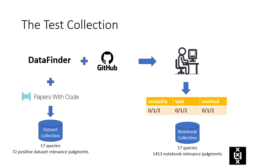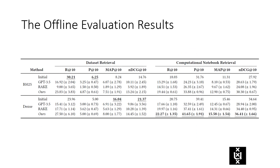We built a test collection to assess the reformulated queries. We chose queries and dataset relevance judgments from the dataset finder, and then further annotated relevance judgments from notebooks. We assess the top five reformulated queries based on the retrieval performance of BM25 and dense retrieval methods. Compared to the initial queries, the reformulated queries without retrieval context and with RIC, the results demonstrate the importance of providing suitable context and leveraging LMs' ability for query formulation.